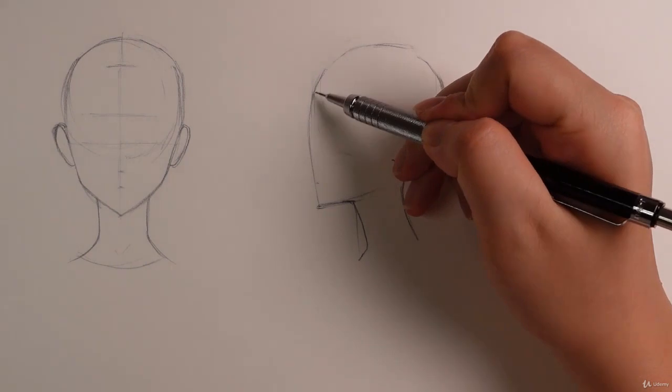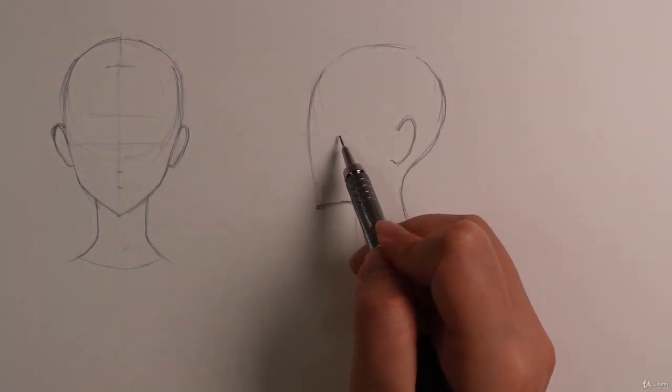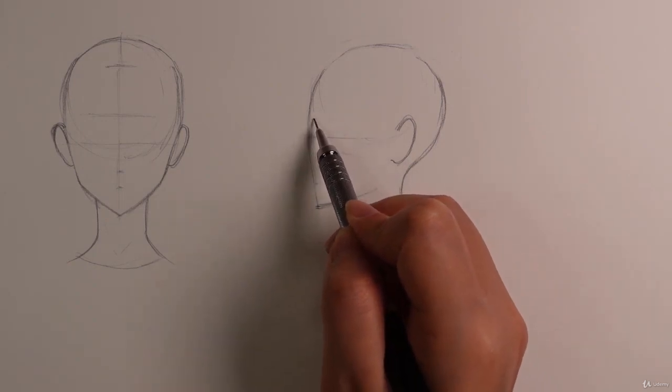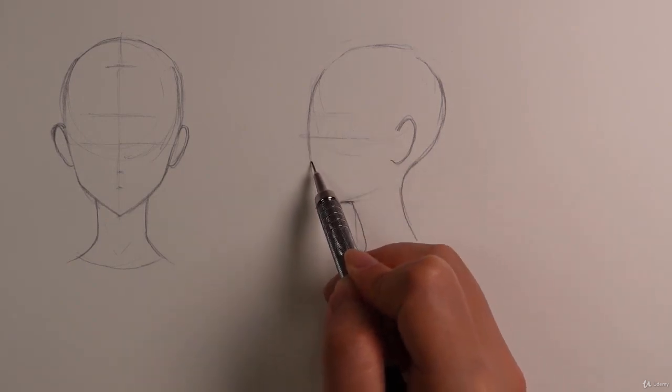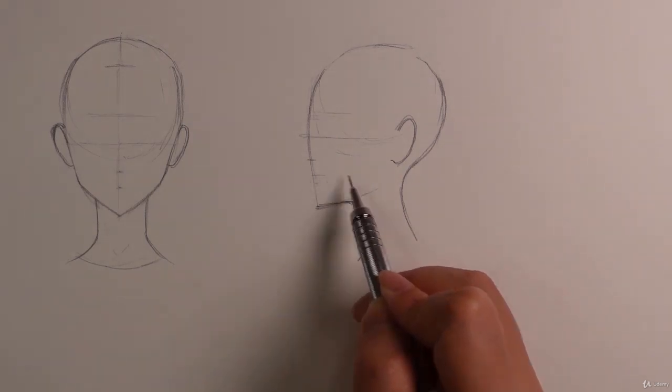And now we can get started with putting in our proportion lines. So eye line will be around here. Our eyebrow line will be a little bit above. Nose line will be a little bit higher. And the mouth will be higher as well.